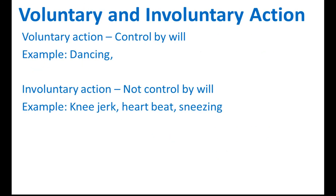Voluntary and involuntary actions. Voluntary action is the action that we can control by will — it's actions that we want to do. For example, dancing: if we want to dance, we can dance; if we want to walk, we can walk. Involuntary action is not controlled by will. Examples include knee jerk, heartbeat, and sneezing — these just happen automatically.